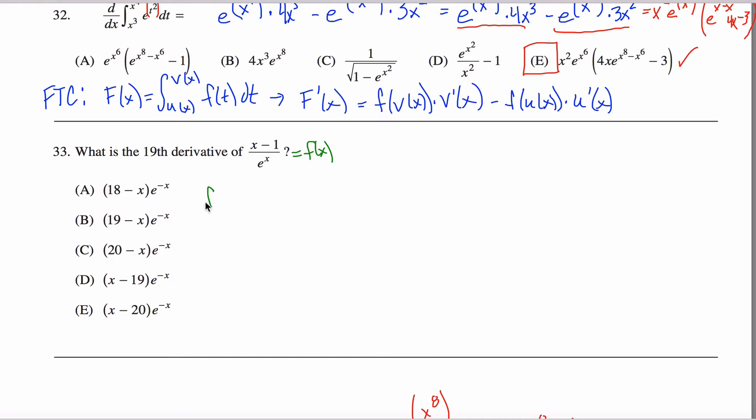f prime of x. How do you want to do this? Do you want to use the quotient rule or the product rule? I'm partial to the product rule, so I'm going to call this x minus 1 times e to the negative x power. You could distribute through but you'd still have a product rule from this first term, so I'm just going to leave it like that.